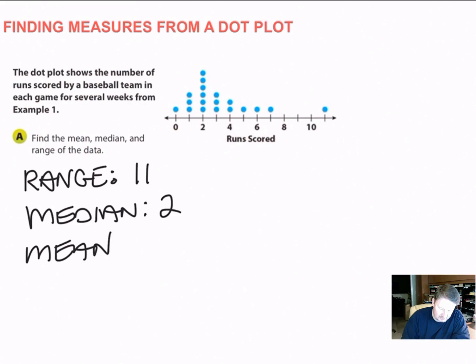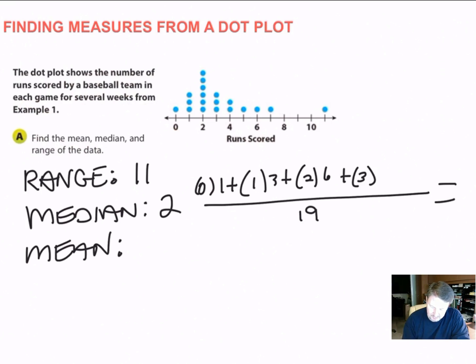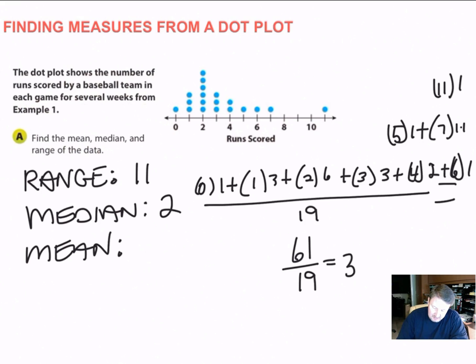We have to add all these numbers up. So if I add all these numbers up, I can do it like this. I can say, all right, I have 19 pieces of data. So I have 0 times 1. And I'm going to add that to 1 times 3. And I'm going to add that to 2 times how many were there? 1, 2, 3, 4, 5, 6. All right, I'm going to add that to 3... So what I wind up with is 61 over 19. So now I just divide. And that's going to give me a mean of 3.2.